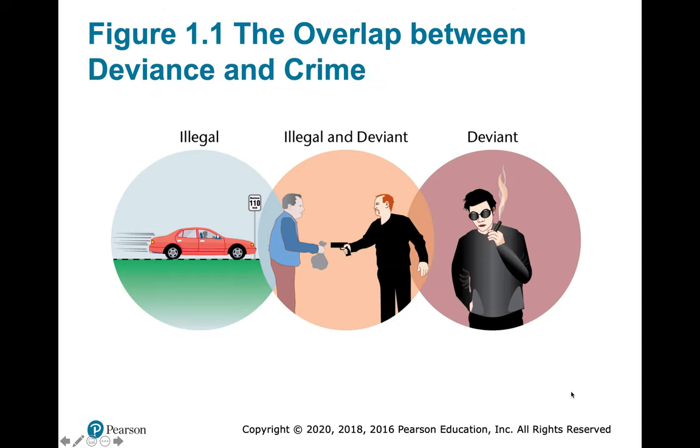We can see that there is deviant behavior, illegal behavior, and then behavior that overlaps both.